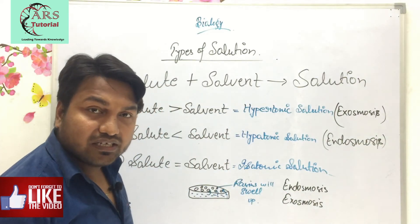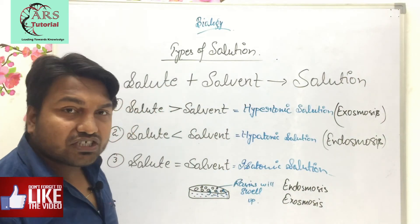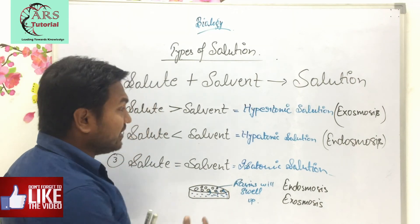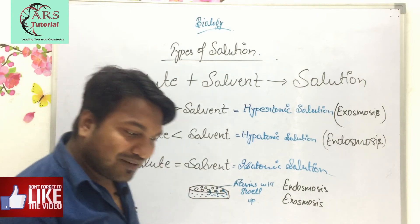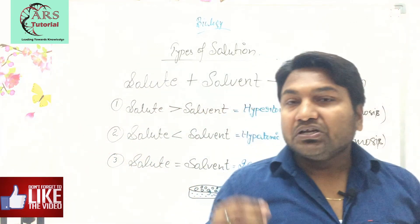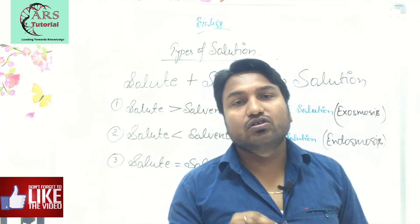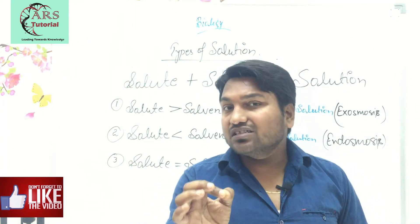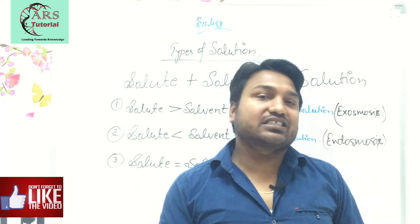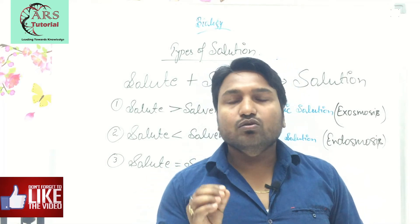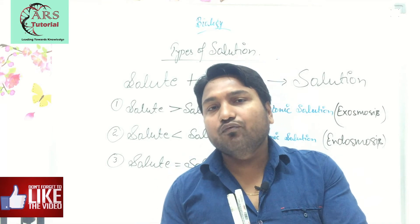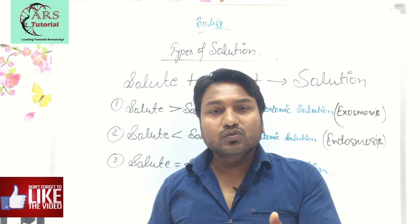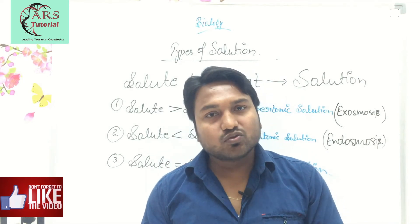In a hypotonic solution, the solvent concentration is greater and the solute concentration is less. If a cell is placed in such a solution — like plain water — the water concentration outside is higher than inside the cell. So water molecules move from outside to inside the cell, causing the cell, the gram seed, or the raisin to swell up. This is endosmosis.